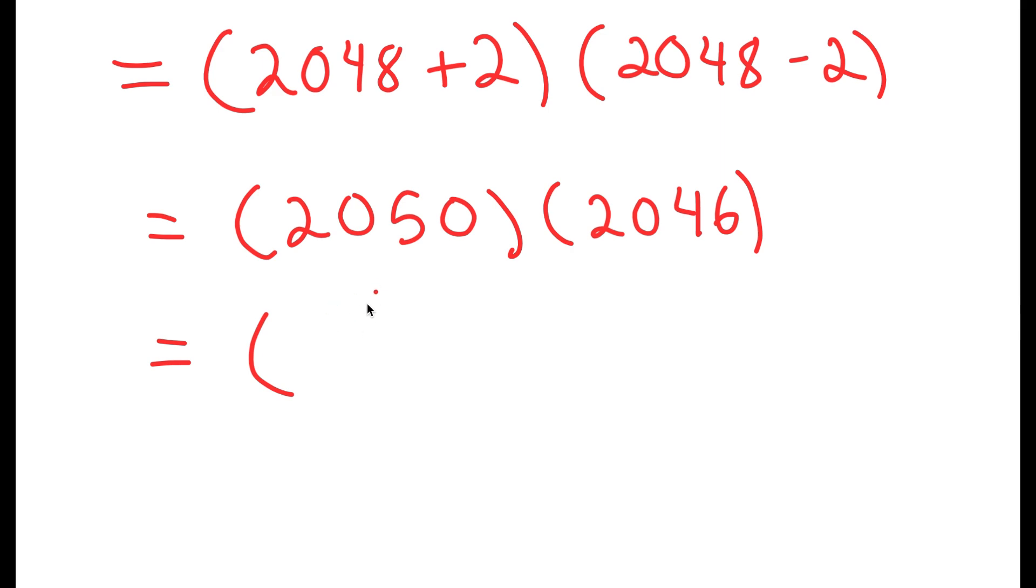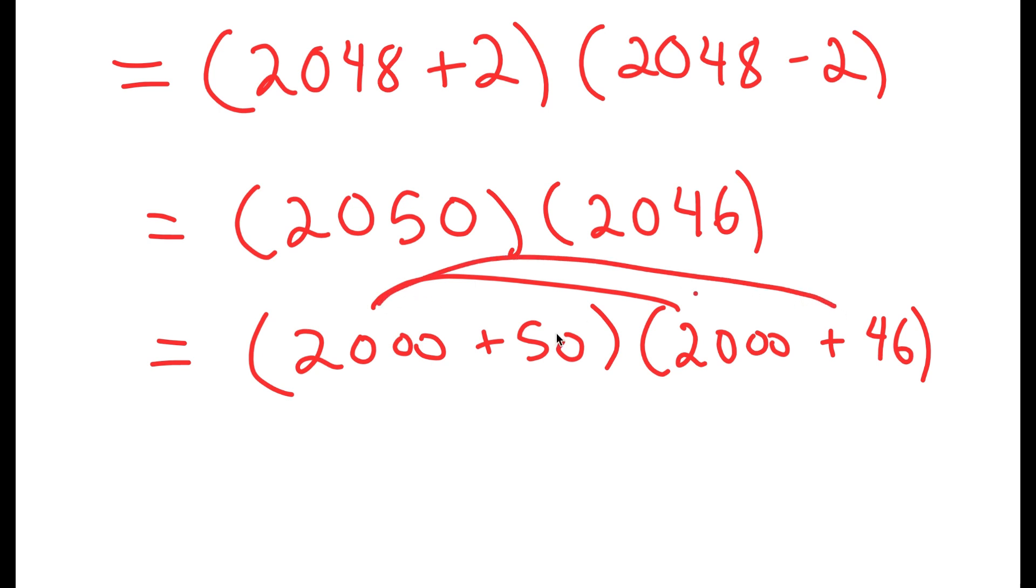So now, to easily multiply this, what I'm going to do is write this as 2000 plus 50. So now, I'm going to distribute this.